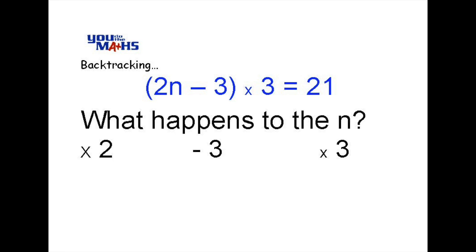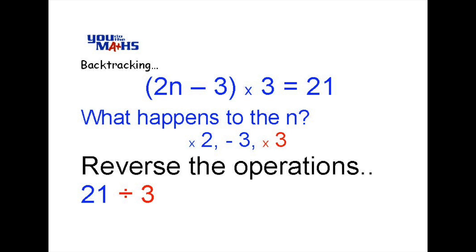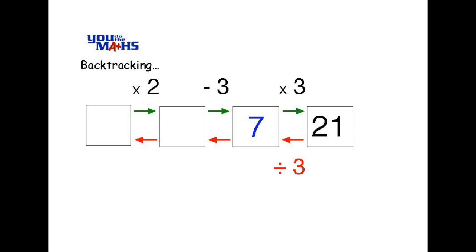To solve this problem we have to apply the opposite operations in reverse order. So the opposite of multiply by 3, because that's the last operation that was done, is to divide by 3. And we place that below the last arrow going in reverse. Notice here that 21 divided by 3 is 7.